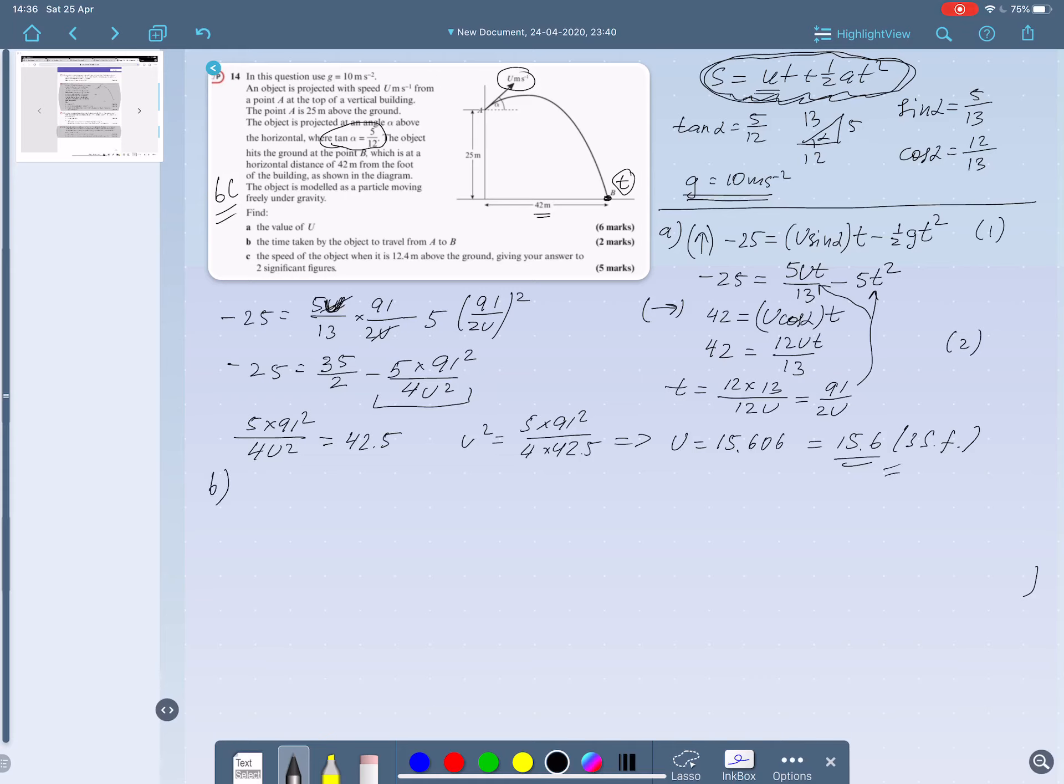Part B: we need to find the time of flight. We know that the time of flight is going to be 91 over 2u. As we know the value of u now, just substitute it. Use more than 3 significant figures to get it as accurate as possible, which gives us 2.92 seconds to 3 significant figures. But again, from my point of view, it doesn't make sense here to give it to 3 significant figures if g is to 1 significant figure.